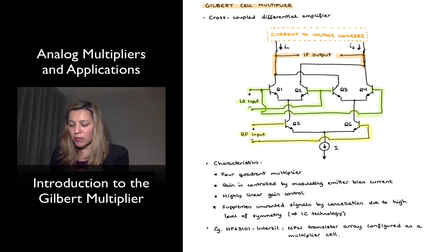The other input of the circuit, or to the circuit, is labeled in green. And I've labeled it as if this was for a mixer application. That would be the local oscillator input. And notice that it is being applied to the two cross-coupled diff amps.